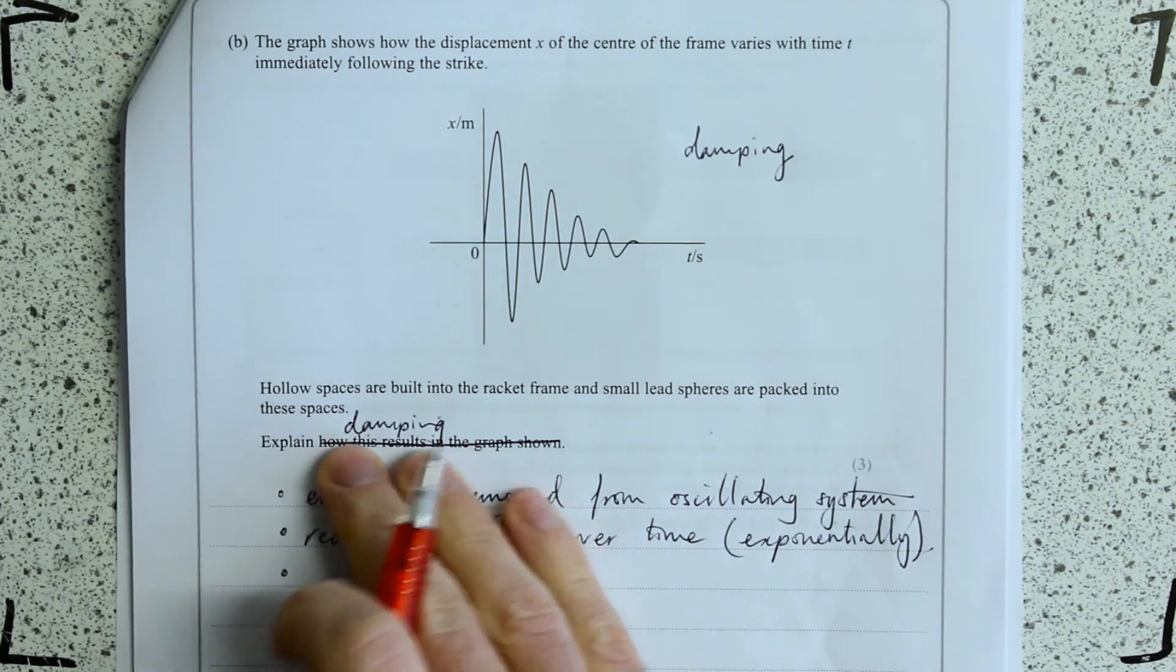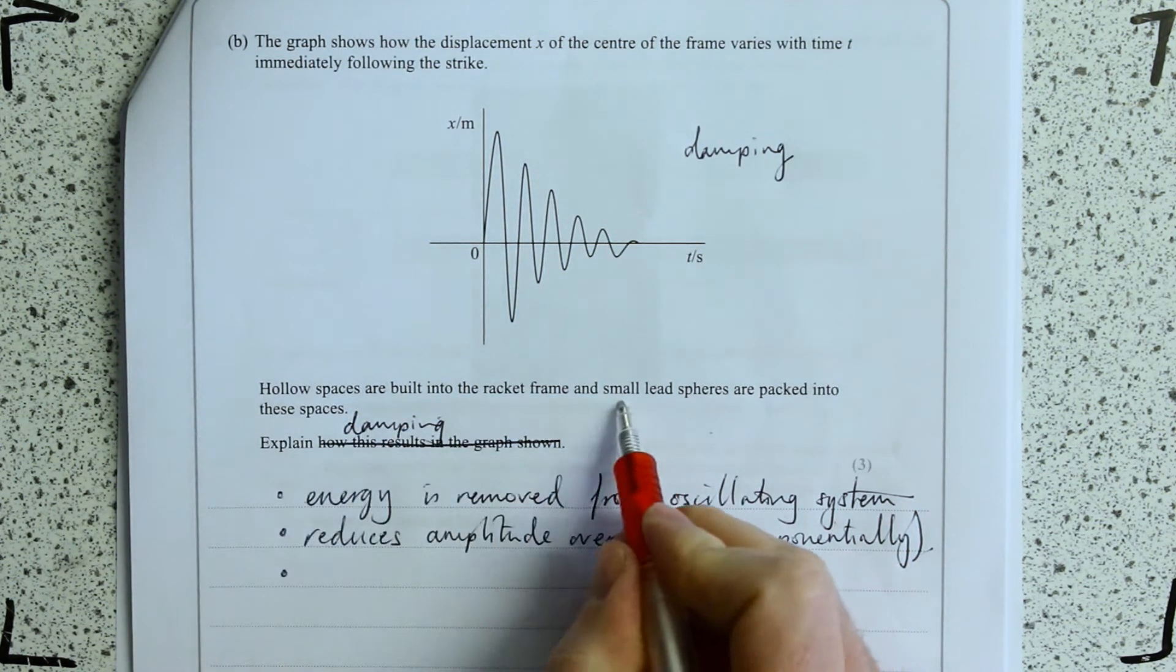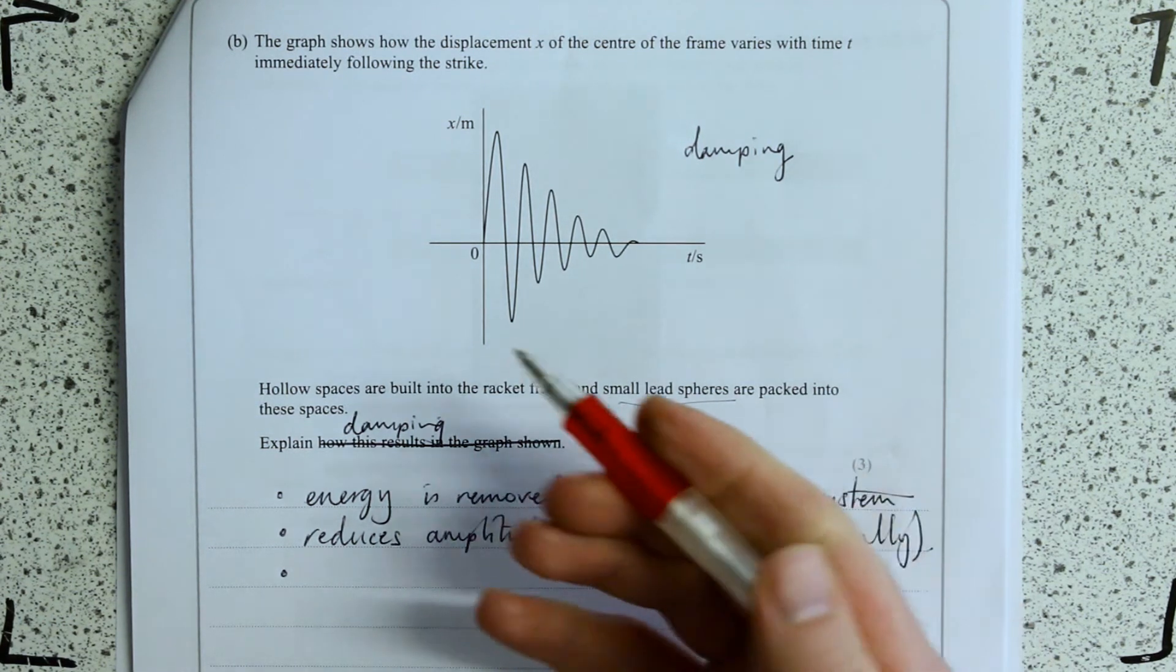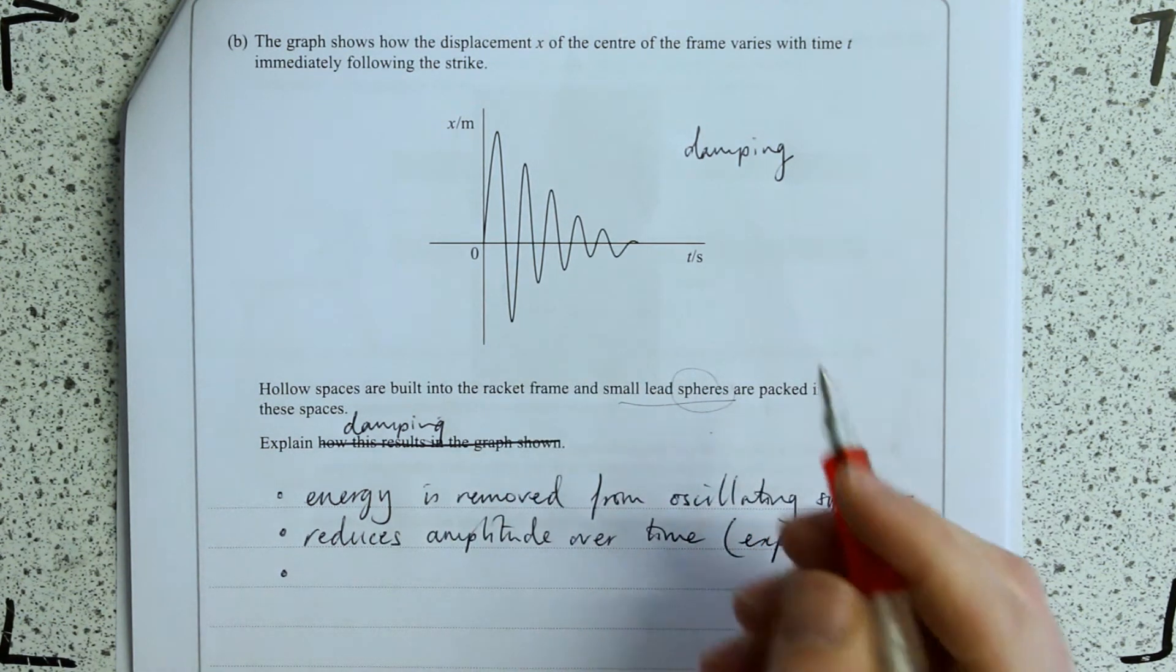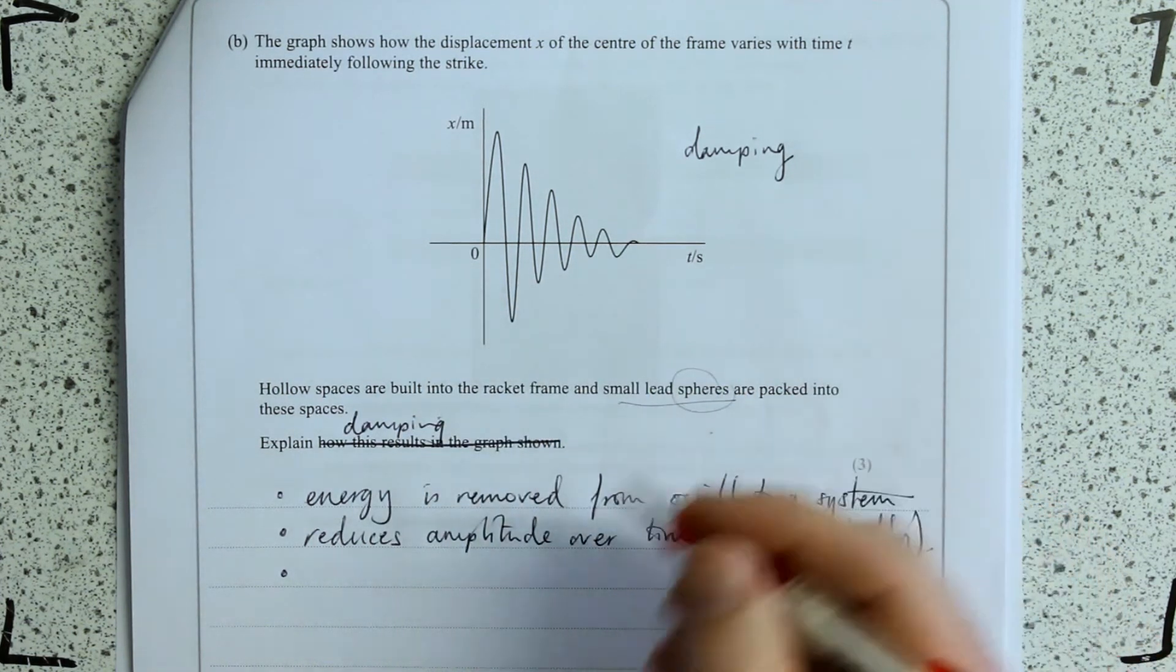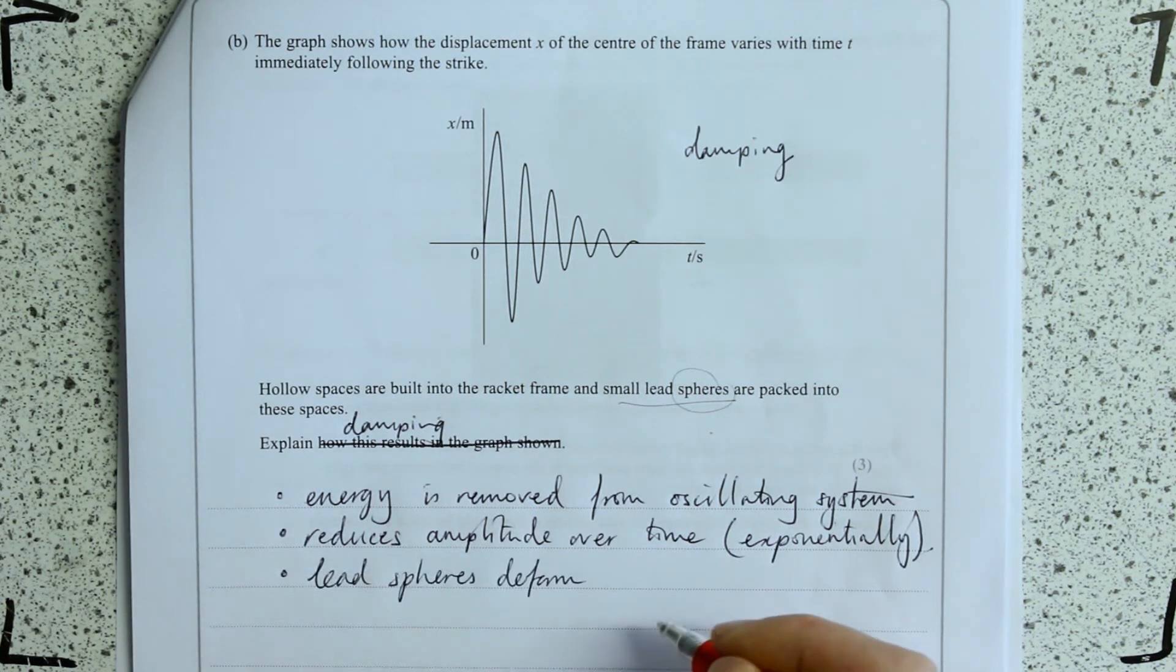And lastly, I'm just going to now apply this damping. What's doing this damping? These small lead spheres. So what's going to happen to these lead spheres? Well, there's two ways that those small lead spheres could absorb that energy. They could deform, absorb some of that energy.